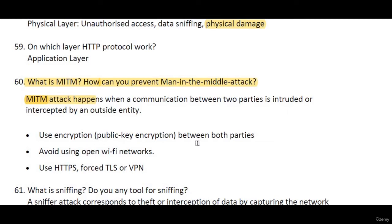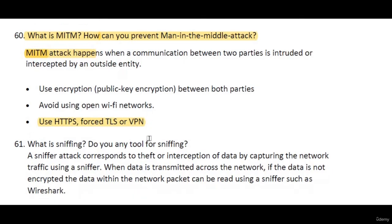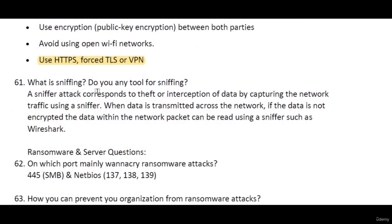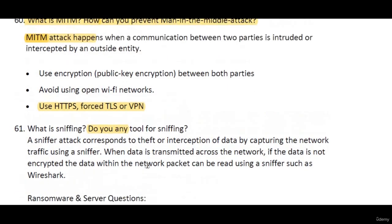To mitigate a man-in-the-middle attack, we can use encryption between both parties, avoid using open Wi-Fi networks, and use HTTPS, forced TLS, or a VPN. A VPN provides an encrypted tunnel through which we can communicate securely. For sniffing, Wireshark is one of the well-known sniffing tools. A sniffer attack corresponds to the theft or interception of data by capturing network traffic using a sniffer.